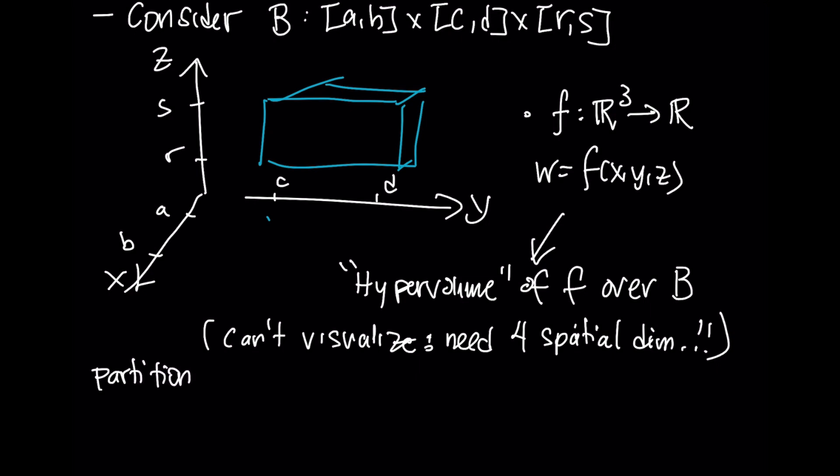As before, what we need to do is create some partitions. So we will take an X partition to start with X0, X1, all the way up to Xn, where some generic point will be A plus I delta X, and delta X will be subdivided into N subintervals.